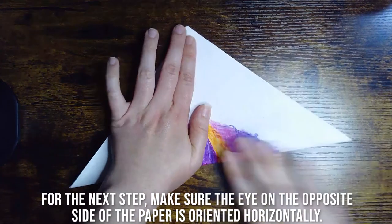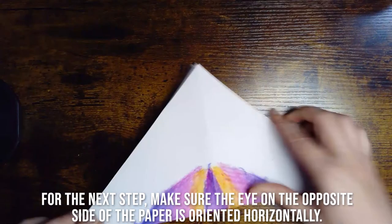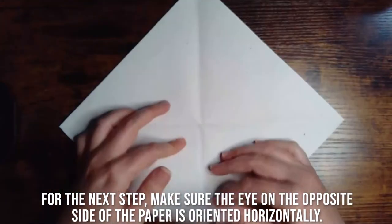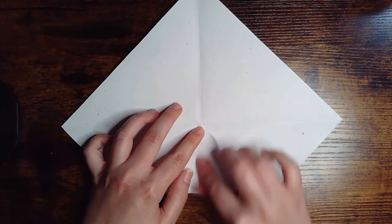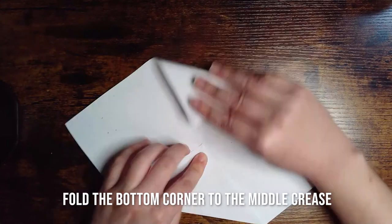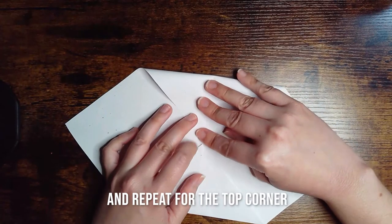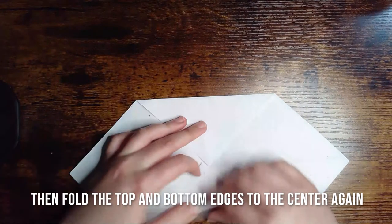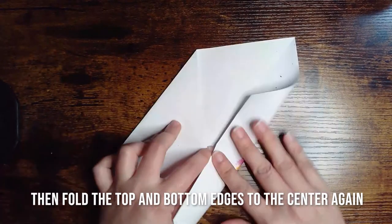As you start on this next step, you want to make sure that the eye on the opposite side of the paper is laid out horizontally. You're going to fold the bottom corner to that middle crease, do the same on the top, and then you're going to do a second fold to that middle crease on both the bottom and the top.